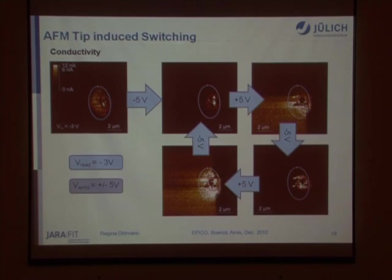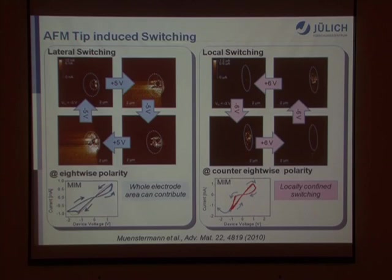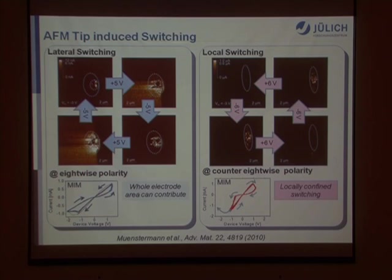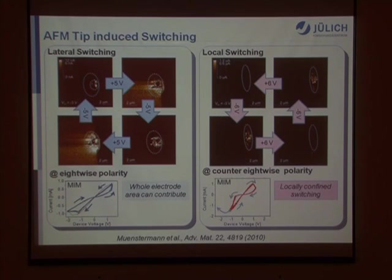We can repeat it: switch off with a negative voltage and switch on with a positive voltage back and forth. That means that next to the region formed during electroforming, we can in principle switch the whole device using a conductive tip electrode. The switching polarity is such that we switch the sample on with positive polarity. Interestingly, we can also switch the main filament region, and the polarity is vice versa — we switch the filament area on with negative polarity and off with positive polarity.